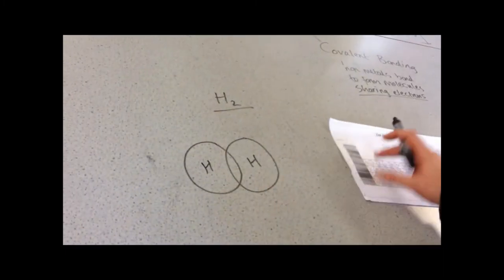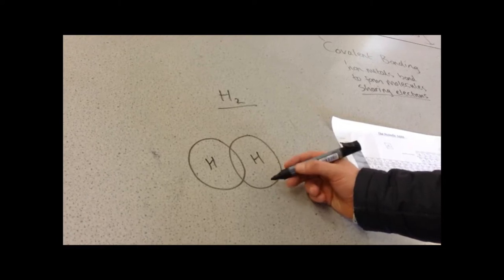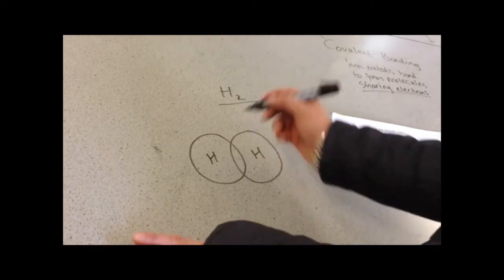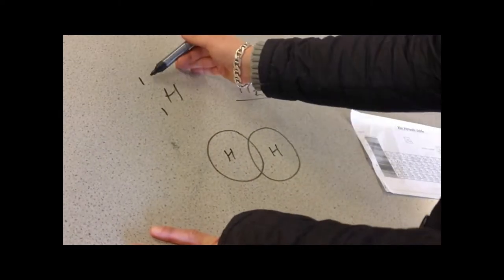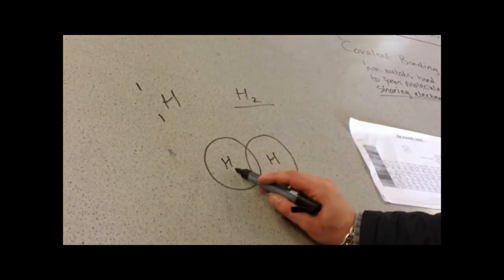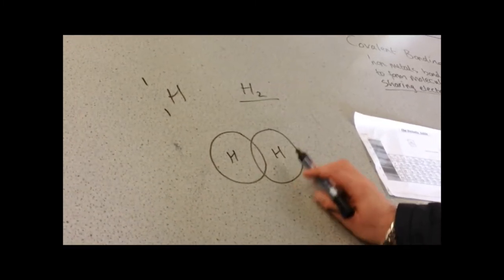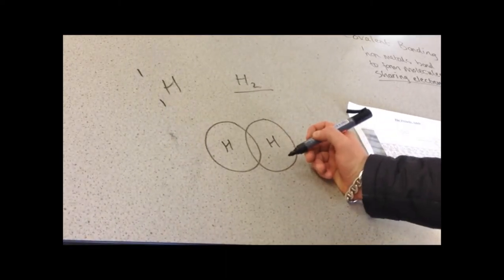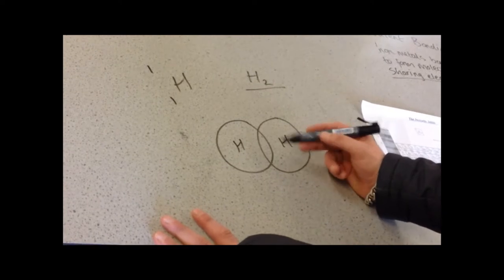The idea is that atoms are trying to get a full outer shell. It's pretty easy with hydrogen because if we look at the periodic table, it has one for its atomic mass and one for its atomic number, so it only has one electron. Because they only have one shell, when they react they want to get a full outer shell, so they want two electrons.